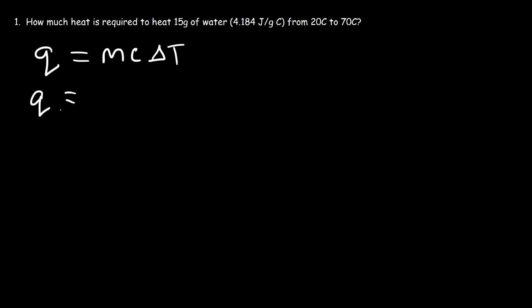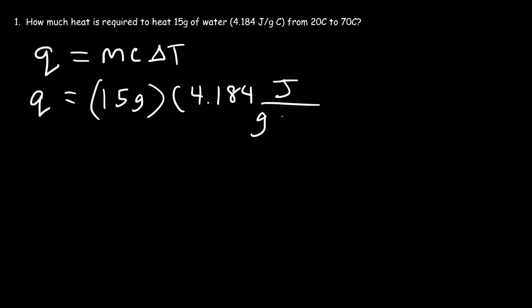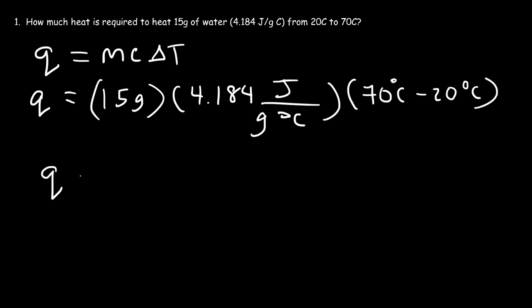We're looking for Q, which represents the heat energy absorbed or released. The mass is 15 grams. The specific heat capacity is 4.184 joules per gram per Celsius. The change in temperature, final minus initial, is 70 minus 20 degrees Celsius. 70 minus 20 is 50. 50 times 4.184 times 15 will give you 3,138 joules.